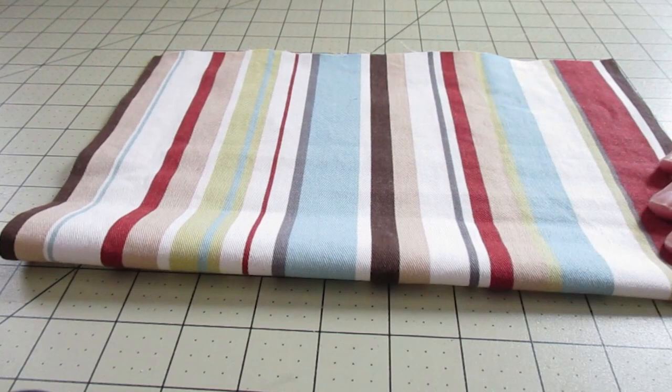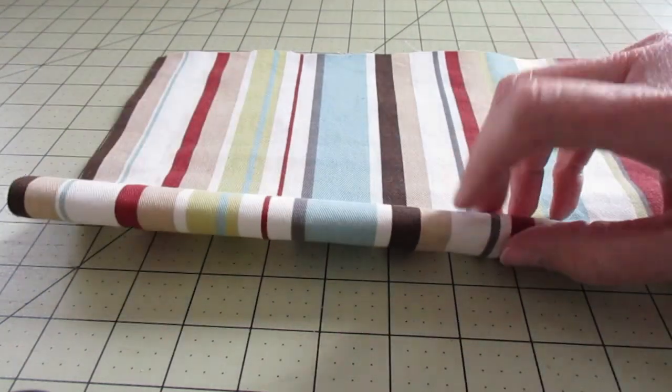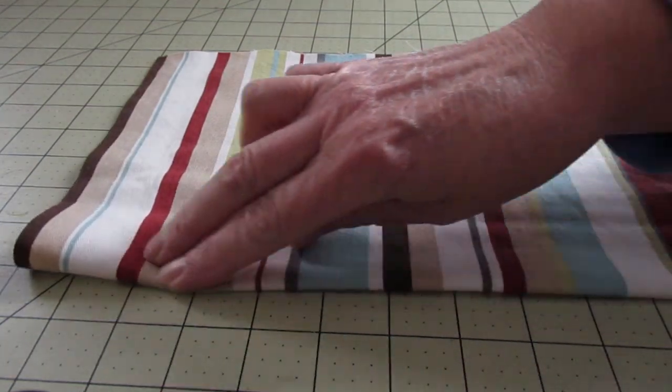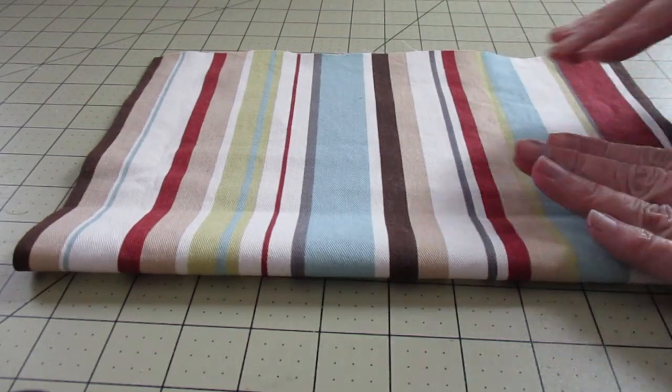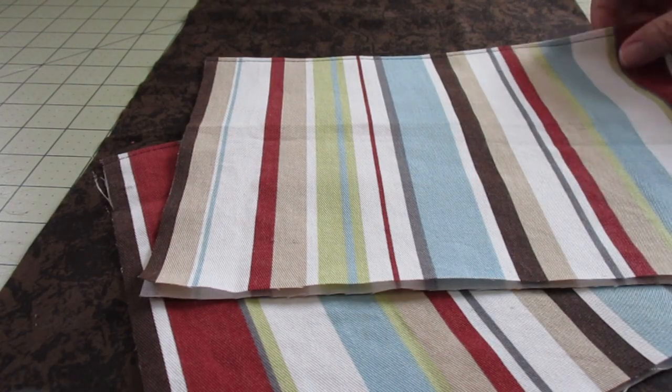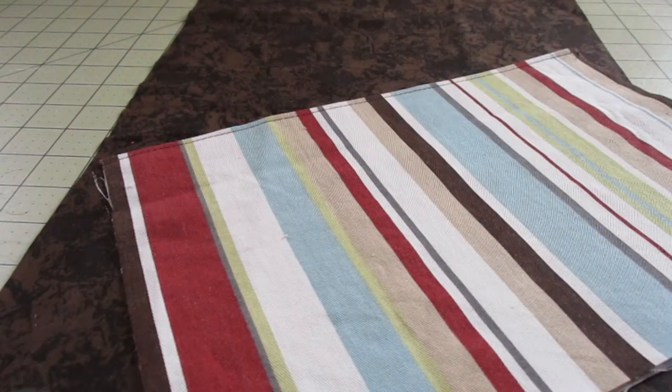I need to go press this and then with this folded seam I'm going to do a top stitch straight across. I'll do that with both pieces. I've top stitched both of the pockets. Let's put one to the side for a moment.